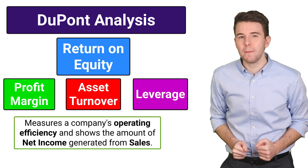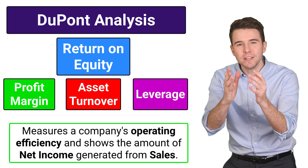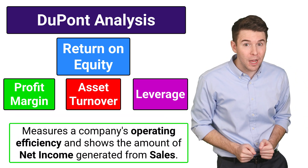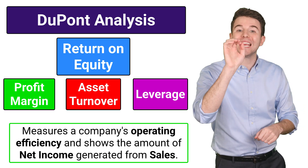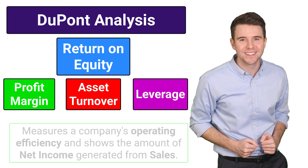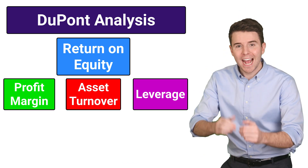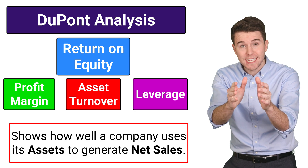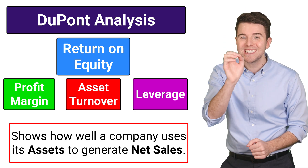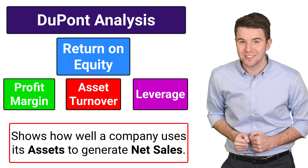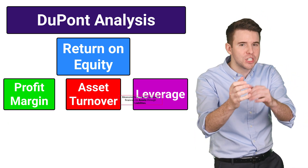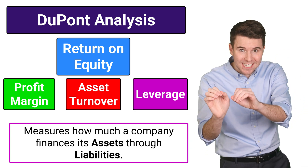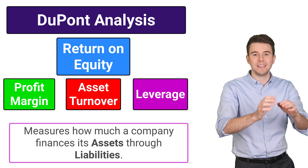Profit Margin measures a company's operating efficiency and shows us the amount of net income being generated from each dollar of sales. Asset Turnover tells us how well a company is using its assets to generate net sales. And Leverage measures how much a company finances its assets through liabilities.